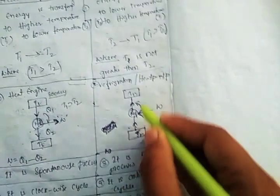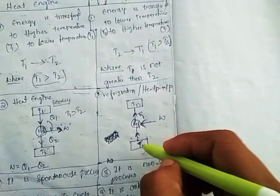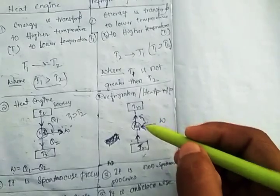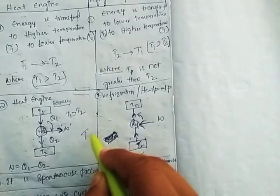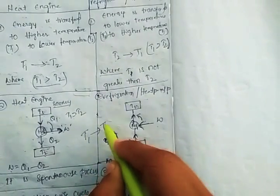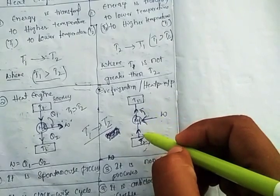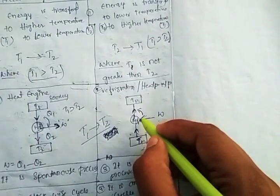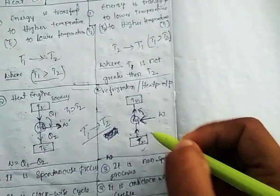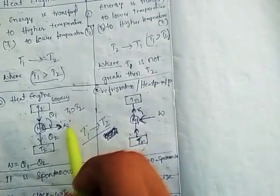The arrows represent energy transferring from T2 to T1. Since energy naturally transfers from higher to lower, but here it is transferring from lower to higher, we have to do some work on this system. That is what makes output possible in refrigeration — this is a major difference between the two.